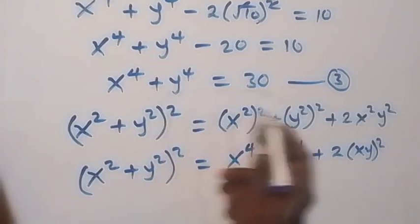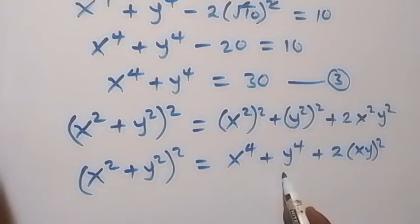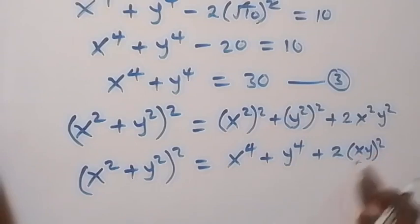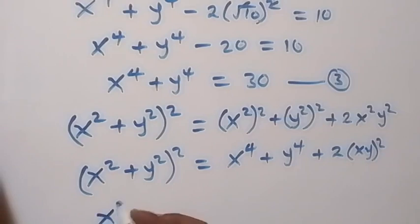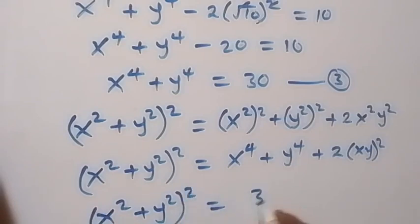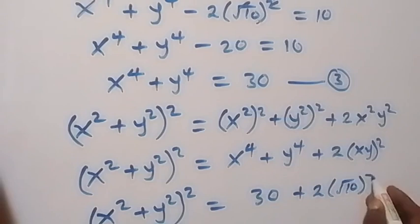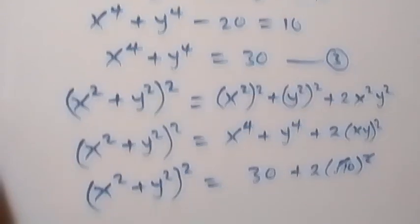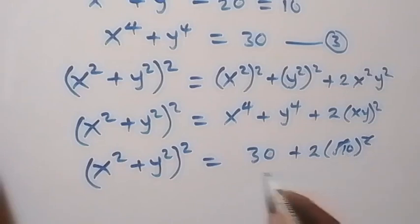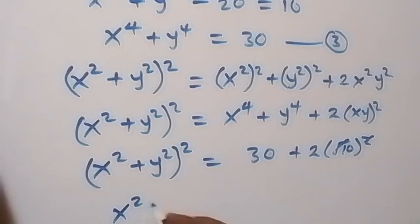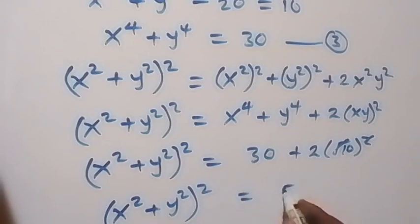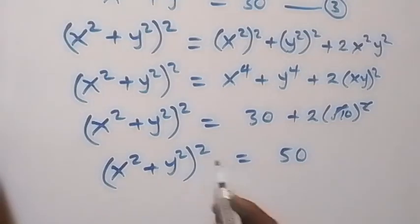Now we substitute equation 3, where x to the power 4 plus y to the power 4 equals 30, and from equation 2 xy equals root 10. This gives us x squared plus y squared all squared equals 30 plus 2 times root 10 squared. The square cancels the square root, giving 2 times 10 equals 20, so 30 plus 20 equals 50. Therefore x squared plus y squared all squared equals 50.